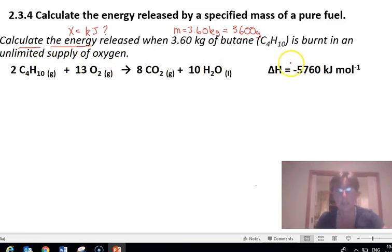Make sure that you write negative because it's exothermic. If you don't write negative then you will lose marks. And make sure you write kilojoules per mole. So the first thing that you need to do is turn this 3.6 kilograms or 3600 grams into moles.